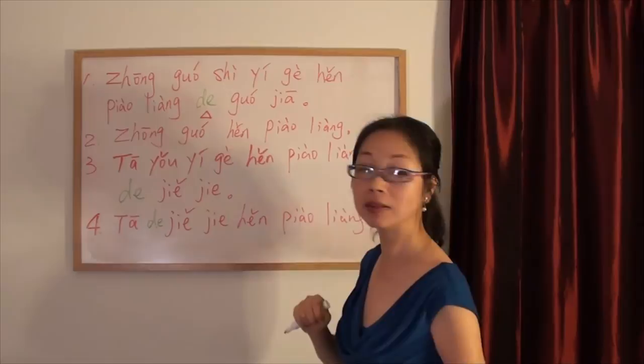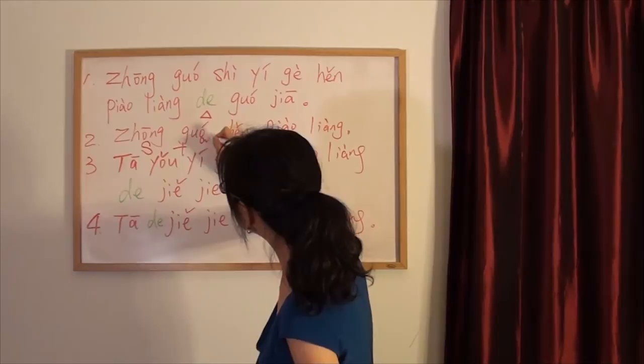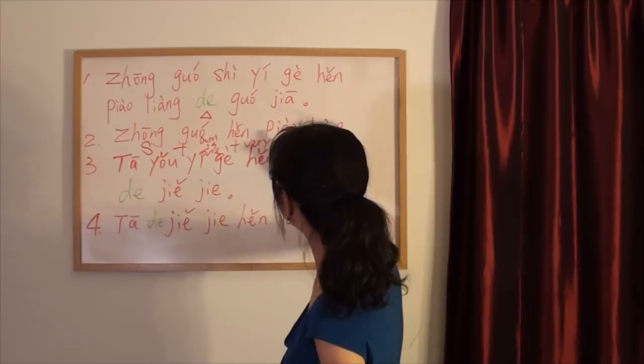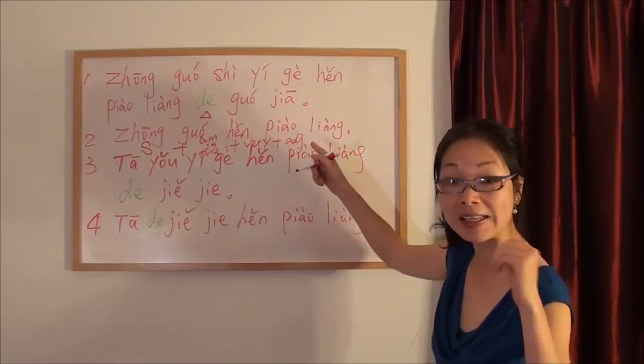So let me draw the conclusion. The sentence pattern for this sentence is if you meet the subject and very and adjective, and after adjective, it's done. There's nothing. There's nothing following the adjective. Adjective.